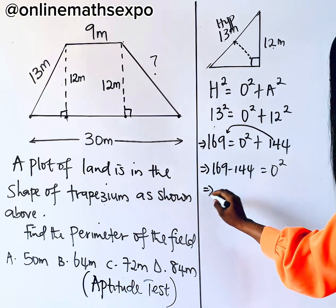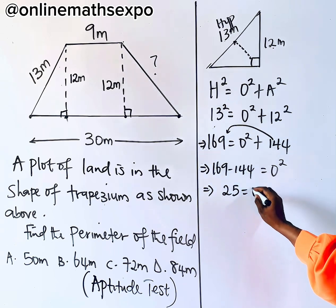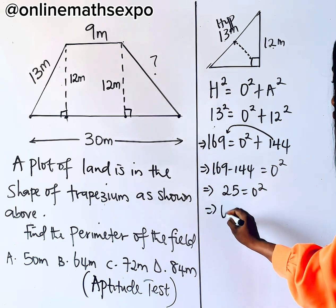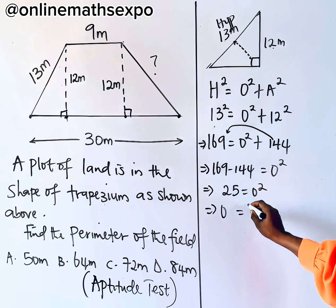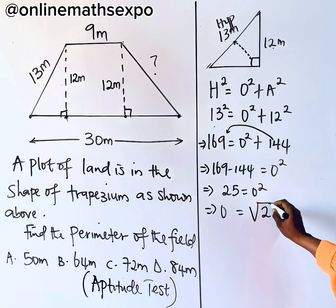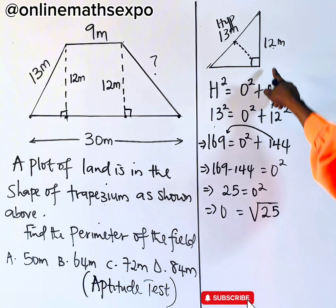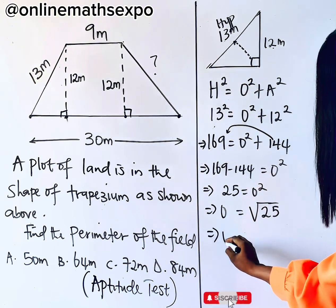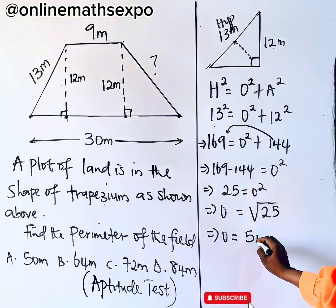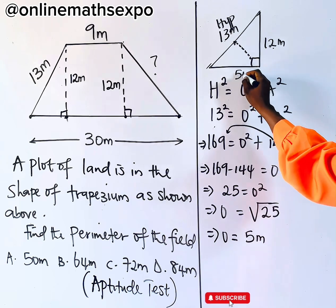So if you subtract this, it gives you what? 25. So to get your O, you need to take the square root of 25. Remember to take only the positive square root because this is side. And when you do that, your opposite side will give you 5 meters. So this part is 5 meters.